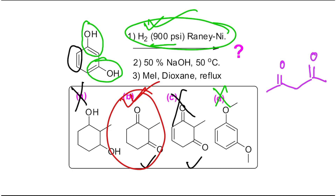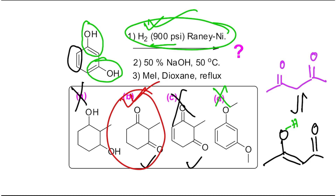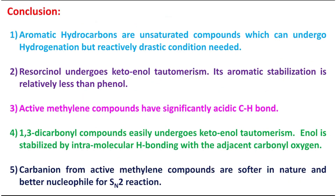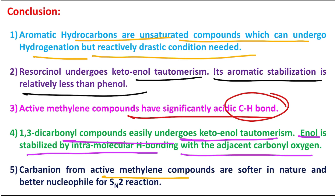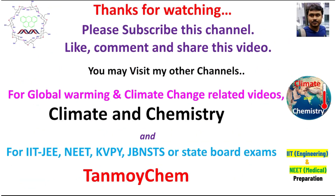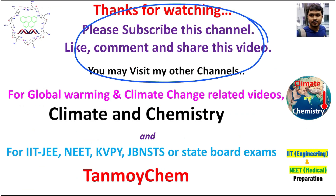For example, in acetylacetone the enol form is stabilized through a six-membered ring by intramolecular hydrogen bonding between the enol O-H and the adjacent carbonyl oxygen. Carbanions from active methylene compounds are softer in nature, making them better nucleophiles that can participate in SN2 reactions. This is the end of the discussion. Thanks for watching - if you enjoy the content of my channel, please help it grow and visit my other channel for further learning. See you in the next video!